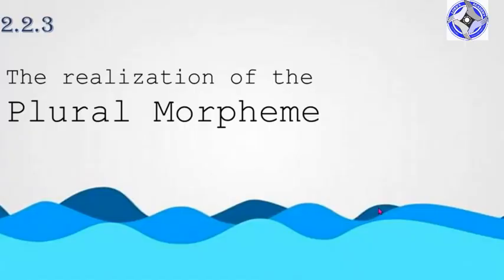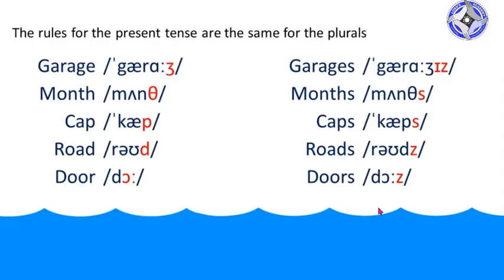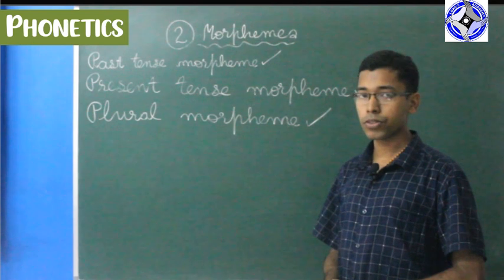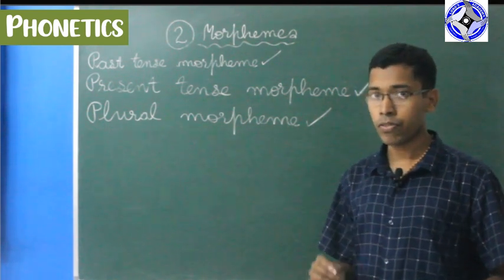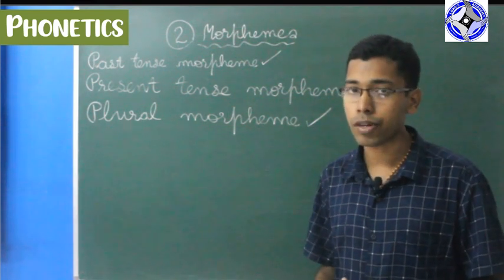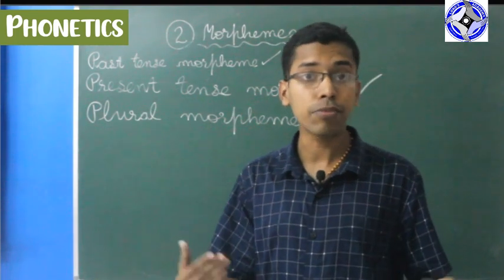Let's go in detail. Here is the realization of the plural morpheme — the rules for the present tense are the same for plurals. Garage — garages. Month — months. Cap — caps. Road — roads. Door — doors. I think the plural morpheme is also clear to all of you. Isn't it easy? There is not much difference between the present tense morpheme and the plural morpheme.